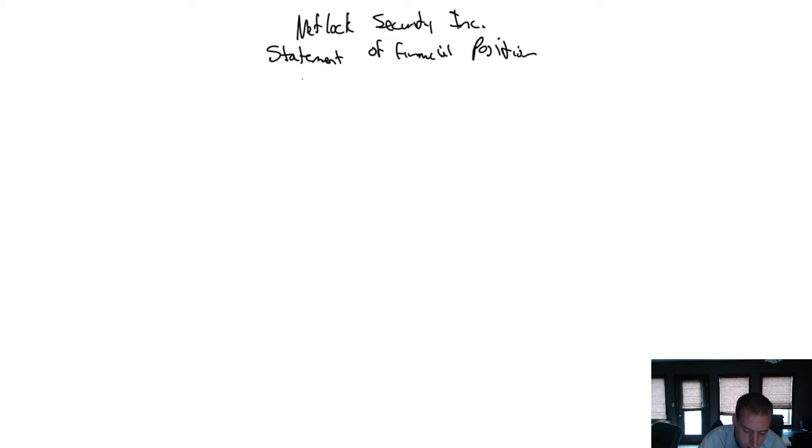And the date is June 30th, 2017. We do not need to put 'for the year ended' — in fact, we should not put 'for the year ended' on a balance sheet.